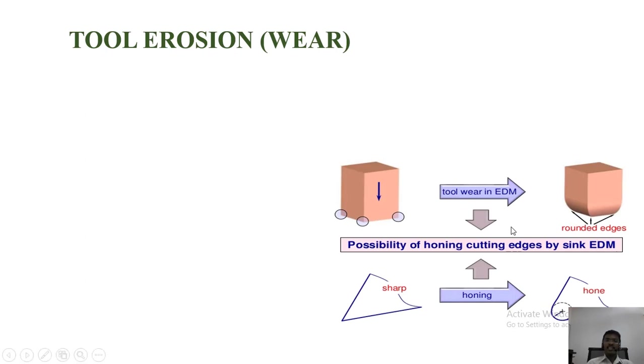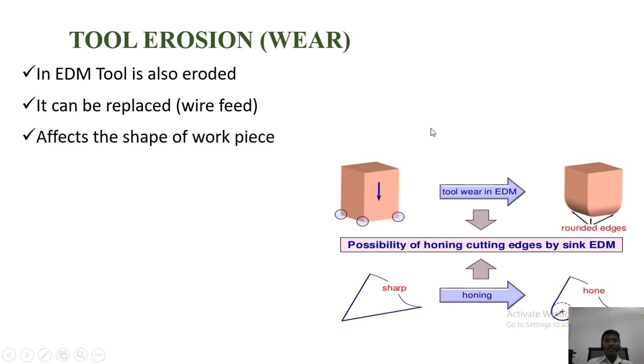Next one is tool wear. The tool wear is a common phenomenon in electrical discharge machining. You can see here this one is a new tool. All corners are very sharp. After machining the tool will be worn like this. So we have to recondition the tool. To avoid wearing this tool, we can replace the tool as a wire. If we are replacing the tool as a wire, we can avoid damaging the tool. This tool affects the shape of the workpiece. So if the tool is wire, it will be very useful to us.